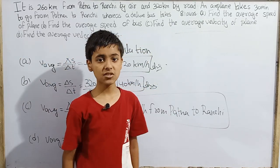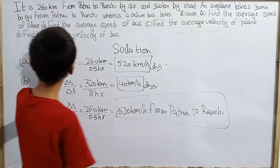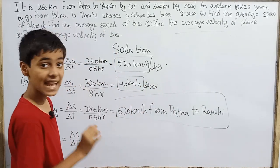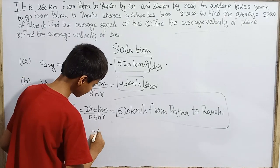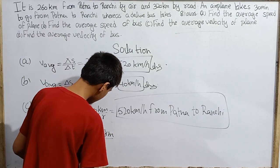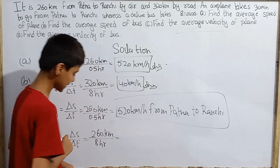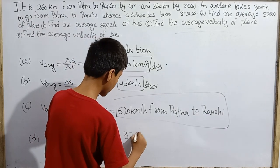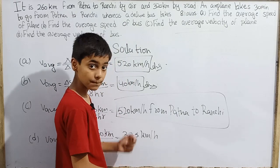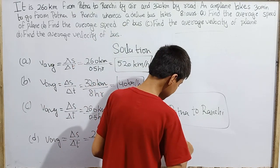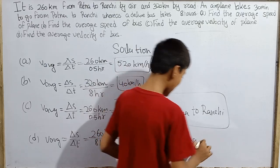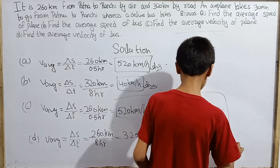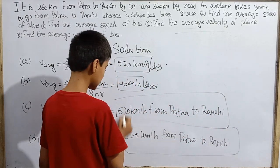So this is 260 km over 8 hours. What is this? This is 32.5 km per hour. Where to where? Patna to Ranchi. The direction is the same. The direction is the same. Both plane and bus are the same direction. What is the difference in the magnitude of their velocity? Their average velocity. Or in the magnitude of their speed. I don't need to say that.